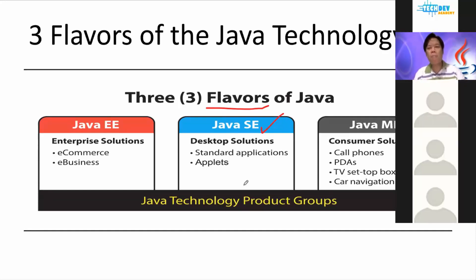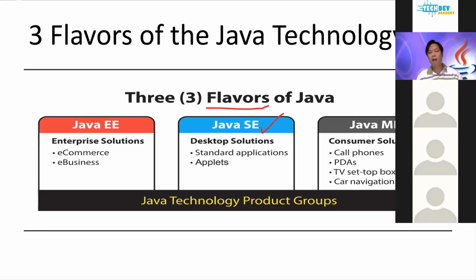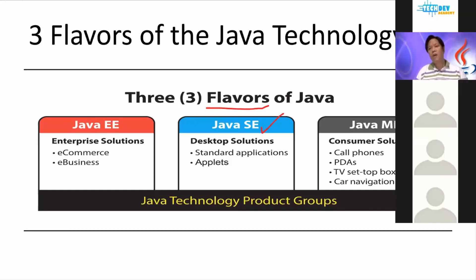For mobile devices, we have Java ME. Java ME stands for Java Micro Edition. Don't confuse Java ME with Android. Java ME is the old version that is used for Nokia phones.